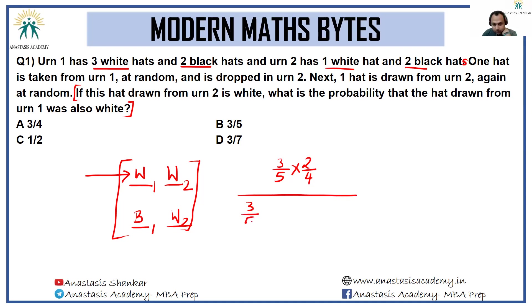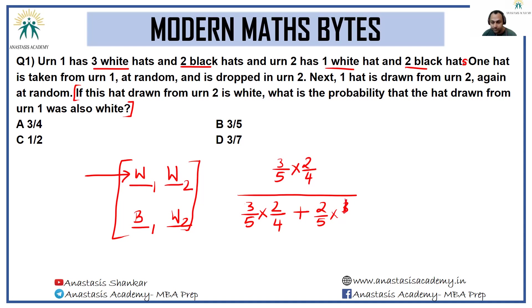The total is (3/5 × 2/4) plus the case where black comes out of urn one and white comes out of urn two: (2/5 × 1/4). Altogether, the fours and fives cancel, leaving us with 6/8, which equals 3/4. That is option A.